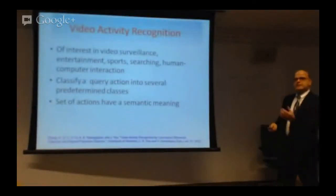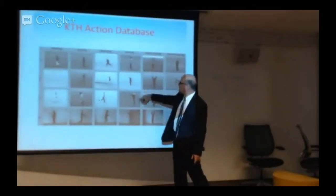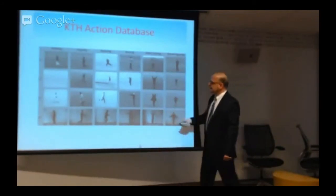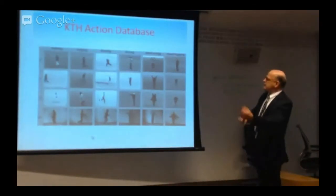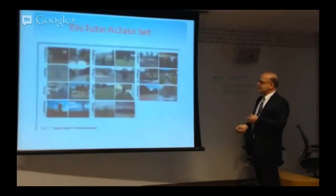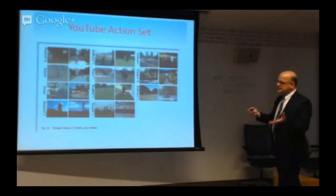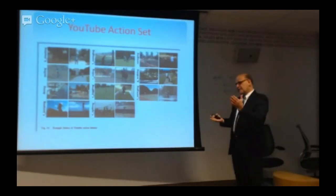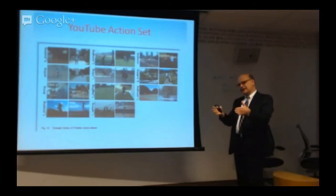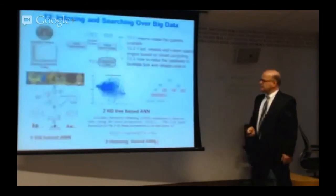We've also done work in recognizing activities. This is an example of a database — one clip shows a person boxing, another shows a person walking. There are specific activities: walking, jogging, running, boxing, hand waving, and so on. We applied machine learning and classification techniques to classify these activities, achieving performance between 80% and 95%. Activities that look very similar, like walking and jogging, do cause some confusion in classification.